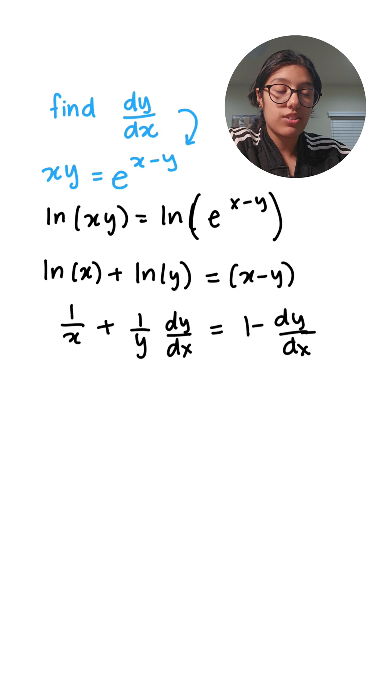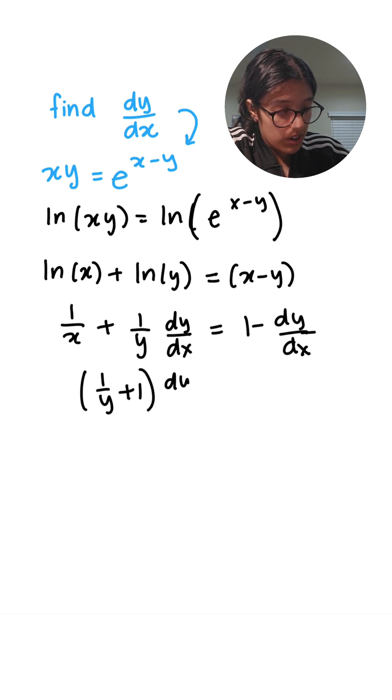Now let's group the dy over dx terms together. So we have one over y plus one dy over dx equal to one minus one over x.